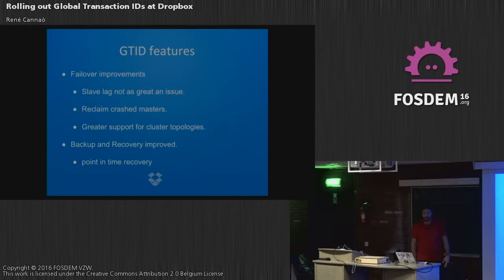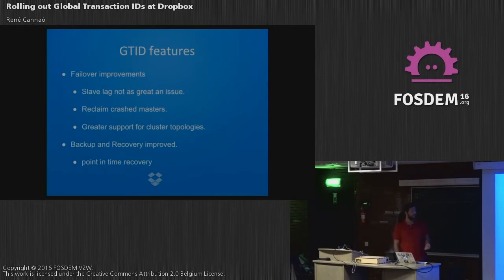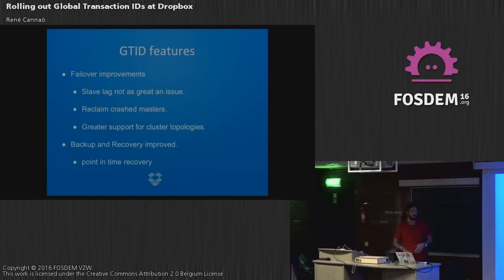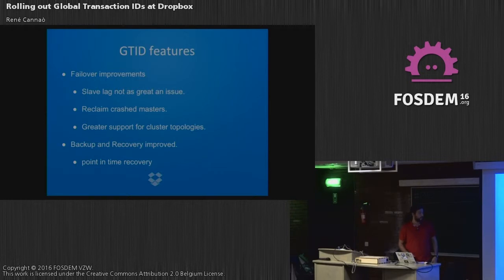There is quite a long list of GTID features, but the most important for us were these: GTID greatly simplifies the failover process, whether it's planned or unplanned. Without GTID, you needed slaves in sync with the master before a promotion. With GTID that's no longer required — you can perform a failover and resume replication from the known GTID. It also helps if a crashed master comes back online, since you know exactly where it stopped. This enables very complex replication topologies and improves backup and recovery.